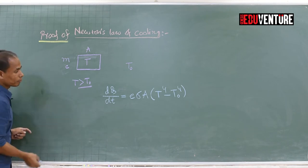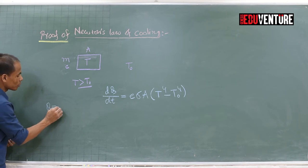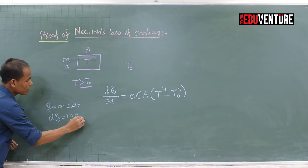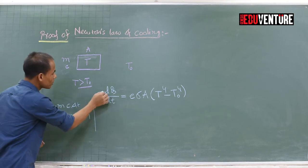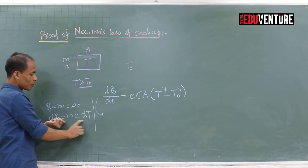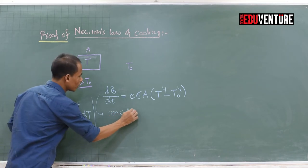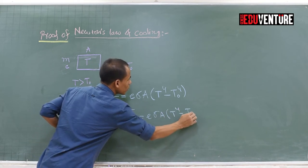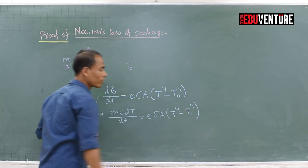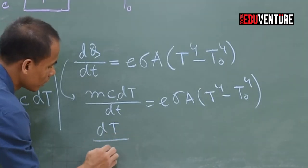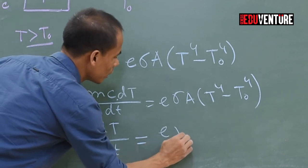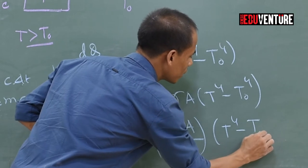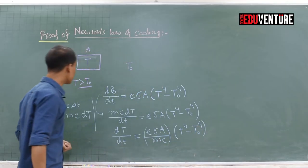From Stefan-Boltzmann Law: dQ/dt = emissivity × sigma × A × (T⁴ − T0⁴). From calorimetry: Q = mc×deltaT, so dQ = mc×dT. Replacing dQ, we get: mc × dT/dt = e × sigma × A × (T⁴ − T0⁴). Therefore: dT/dt = (e × sigma × A / mc) × (T⁴ − T0⁴).